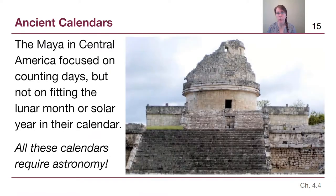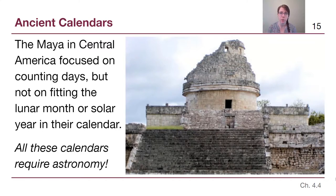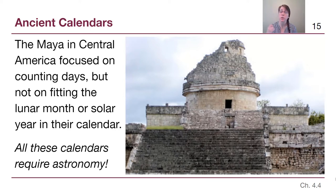The Maya in Central America are one of many cultures we often underestimate. They had observatories designed to focus on the motions of the sun, stars, and moon. The Maya focused on counting days very accurately — they never tried to fit a lunar month or solar year, but were very good at building large-scale calendars that kept track of days properly. The key point is that all of these traditions required paying attention to what's going on in the sky, which is what the rest of our module focuses on: the seasons and the phases of the moon.